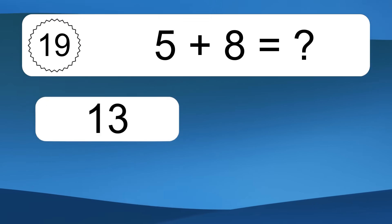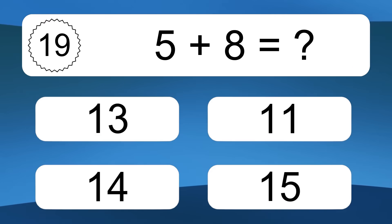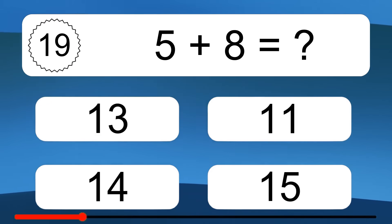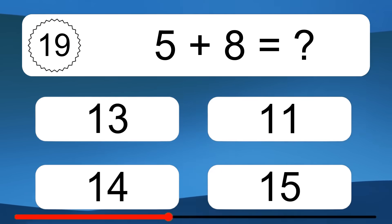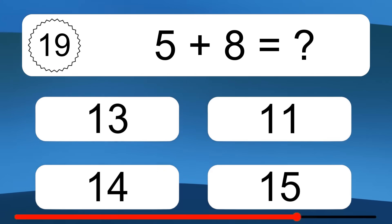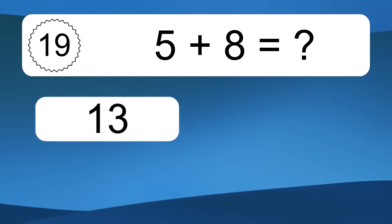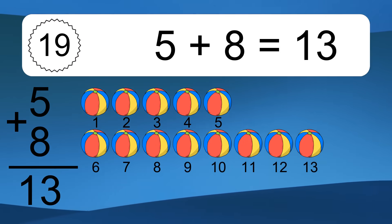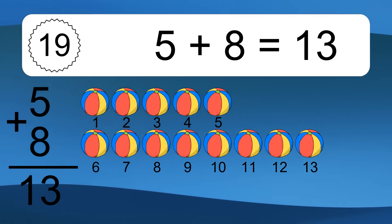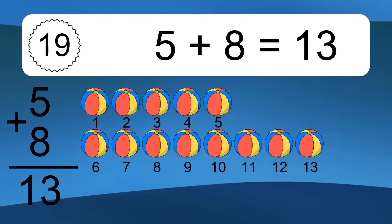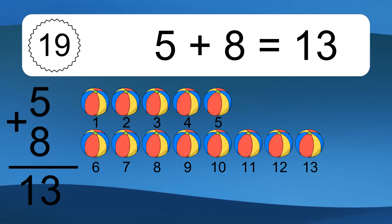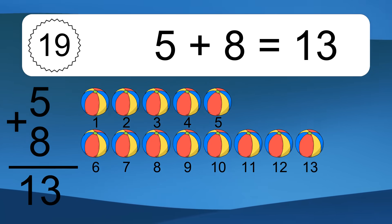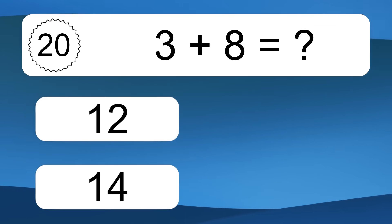5 plus 8 equals what? 5 plus 8 equals 13. Let's count it: 1, 2, 3, 4, 5, 6, 7, 8, 9, 10, 11, 12, 13.